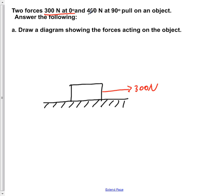We then go and show the 400 N at 90 degrees, which would be straight up off the top of the box. So that's 400 N. Here we have just drawn the diagram showing the forces acting on the object.